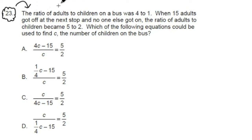It says here, the ratio of adults to children on a bus was 4 to 1. When 15 adults got off at the next stop and no one else got on, the ratio of adults to children became 5 to 2. Which of the following equations could be used to find C, the number of children on the bus? And we have these different equations going on here.